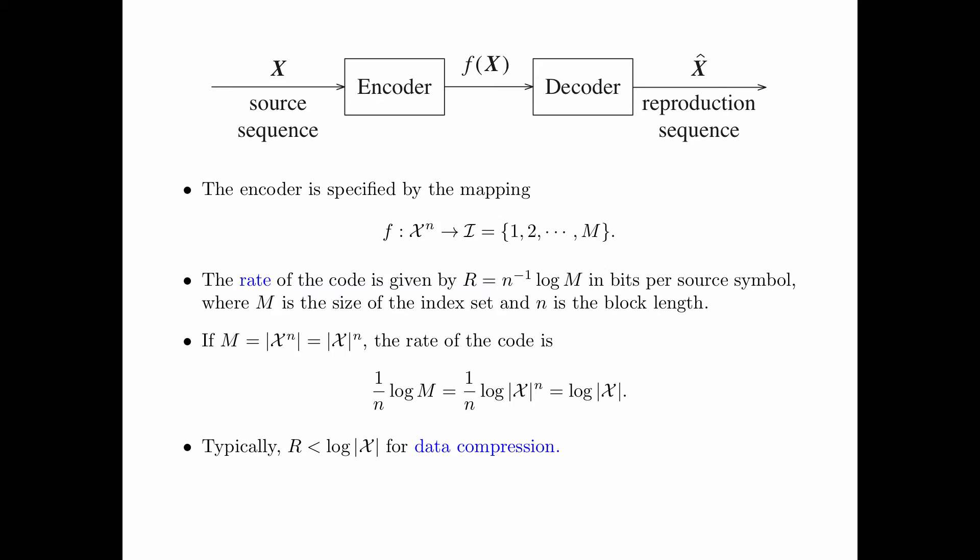For such situations, because the number of indices is less than the total number of source sequences, the decoder may not be able to reproduce the source sequence correctly. An error occurs if x-hat is not equal to x, and the probability that x-hat is not equal to x, denoted by p_e, is called the error probability.